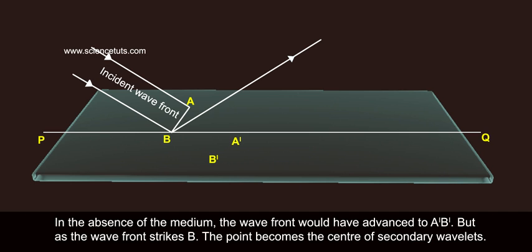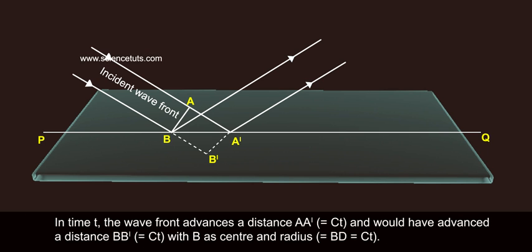the wave front would have advanced to A'B'. But as the wave front strikes B, the point becomes the center of secondary wavelets.